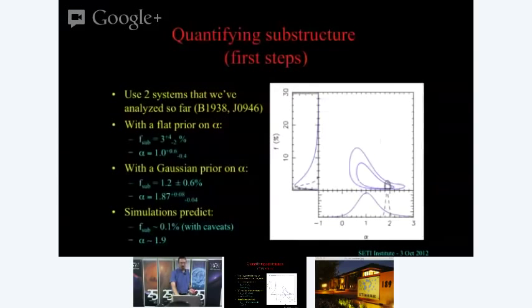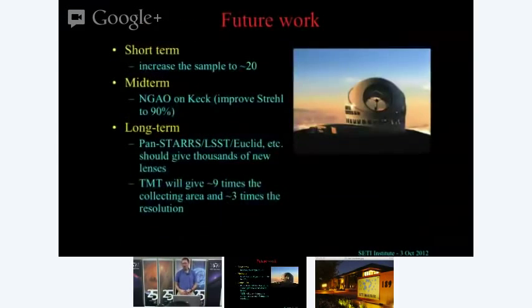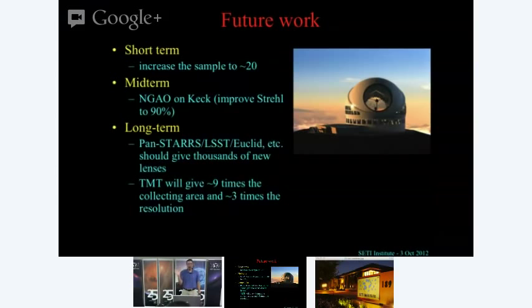We're also working with HST data and trying to detect substructure with high resolution radio data using VLBI — very long baseline interferometry telescopes in Europe and the US. We need better statistics; we're up to three in some sense counting the Milky Way and the two I told you about, and we want to get to around 20 to 30 lenses. At that point, our constraints on the slope alpha and normalization F_sub of the power law mass function will give us interesting results we can compare to simulations. Midterm, there's a proposal to get next generation adaptive optics on Keck, improving the Strehl ratio so we get more light into the central diffraction-limited core.